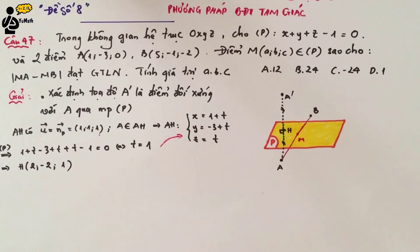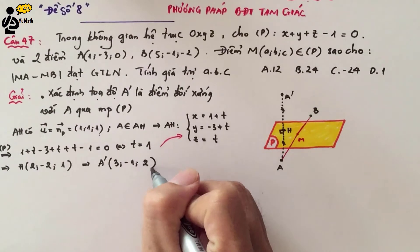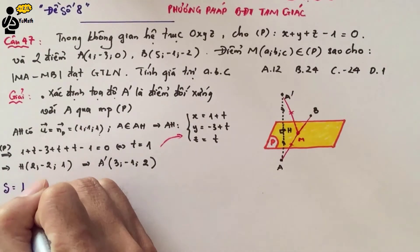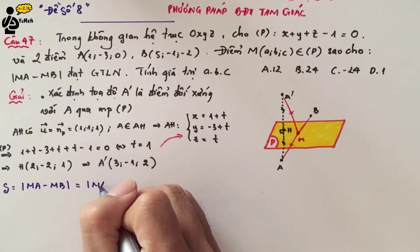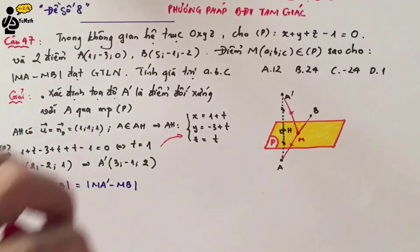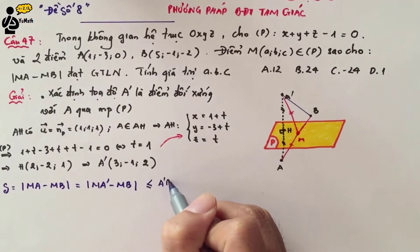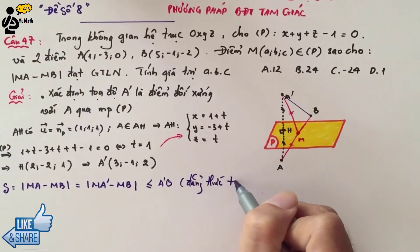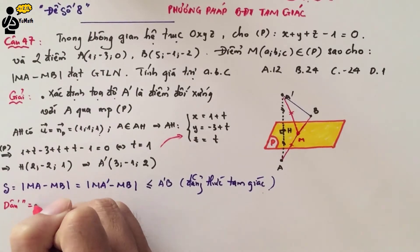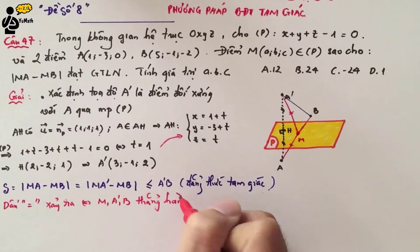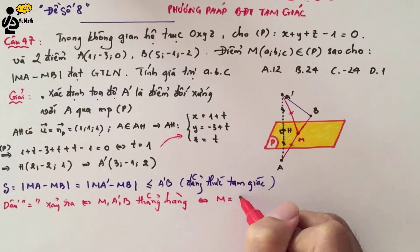Since H is the midpoint of AA', the coordinates of A' equal 2 times the coordinates of H minus the coordinates of A. This gives A' with coordinates (3, -1, 2). Now S = |MA - MB| = |MA' - MB|. Considering triangle A'MB and applying the triangle inequality, we get |MA' - MB| ≤ A'B, with equality when M, A', and B are collinear — meaning M is the intersection of line A'B with plane P.